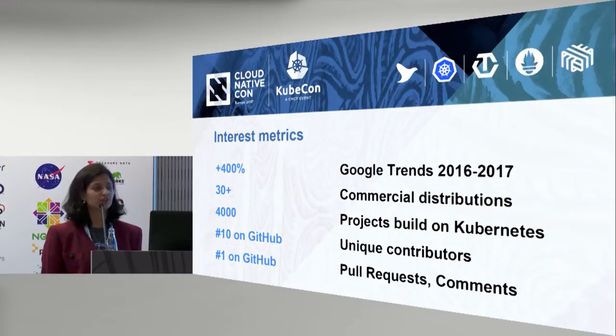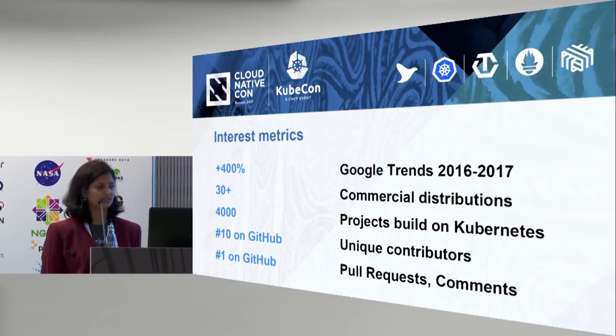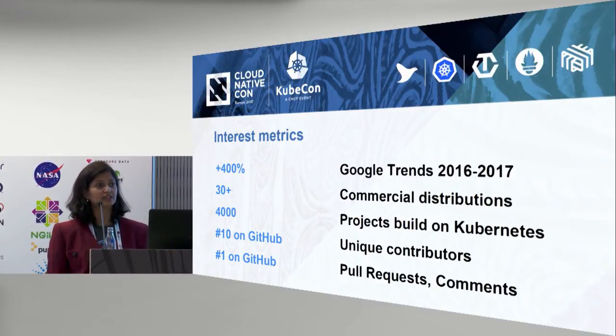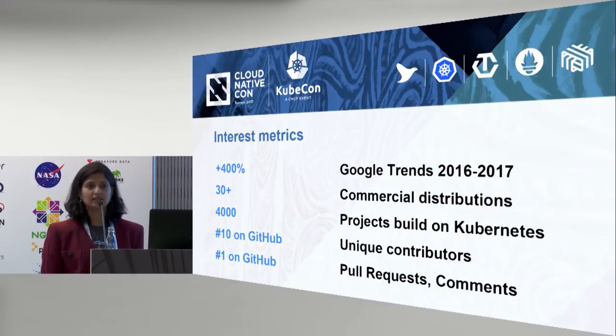On Google Trends over the last two years, there's been a huge increase in Kubernetes interest. There are also 30-plus commercial distributions of Kubernetes to date — companies that have taken Kubernetes and adapted it to different environments. That ranges everywhere from bare metal to VMware to public and private clouds, and from China with Huawei to IBM. With this variety, I think Kubernetes has a shot at achieving that goal.